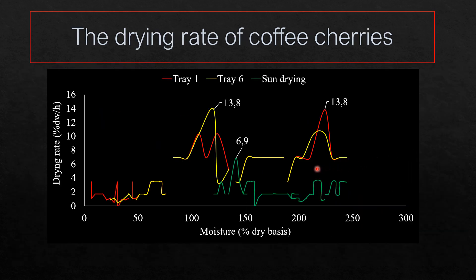This is also supported by the result of the drying rate calculation. By using the solar tunnel dryer type Hohenheim Aceh, the drying rates were higher than those of the open sun drying method. The maximum drying rate in the drying chamber was about 13.8 percent dry basis per hour, while the maximum drying rate in the open sun drying system was only about 6.9 percent dry basis per hour.